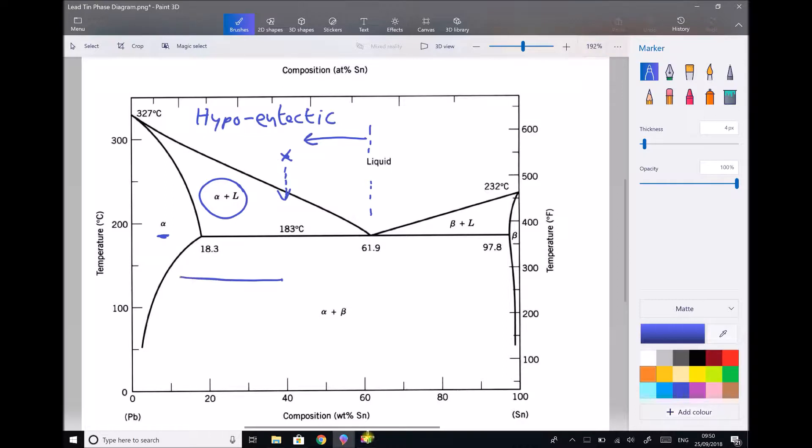So what we will begin to see is alpha solidifying out, so we'll have solid patches like so, and each of these solid patches will be alpha. Recall that alpha is our lead rich solid.